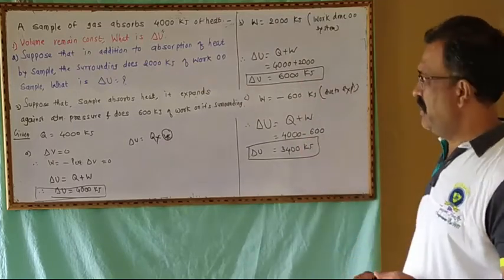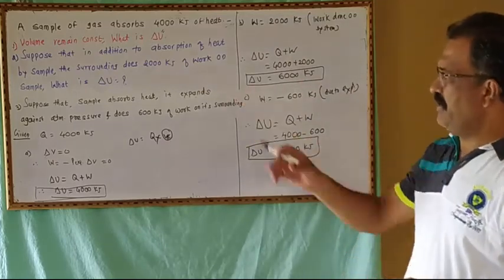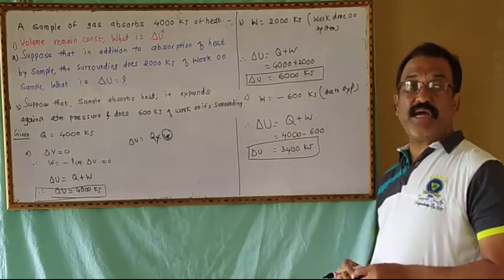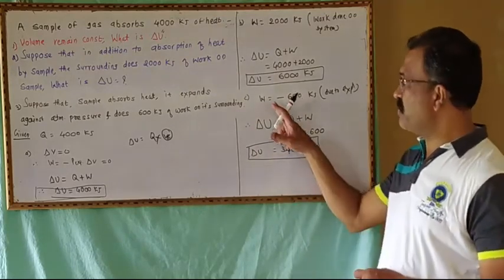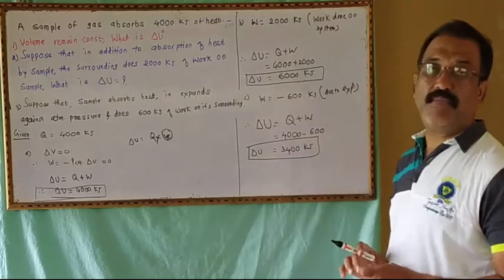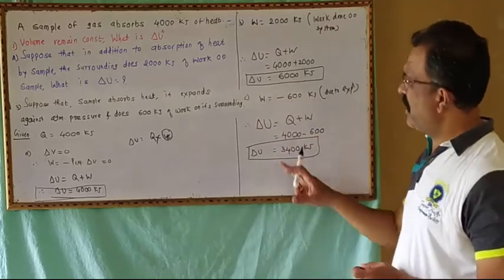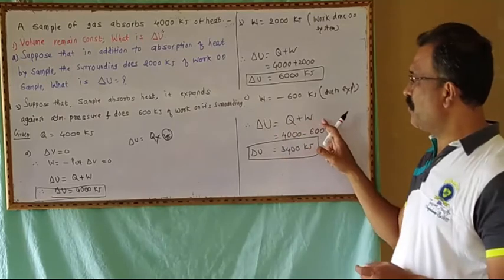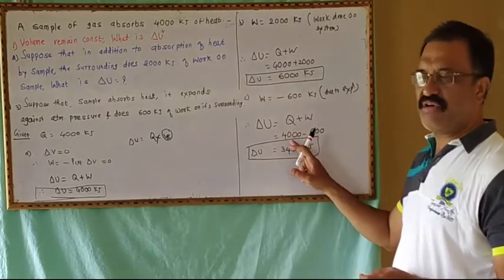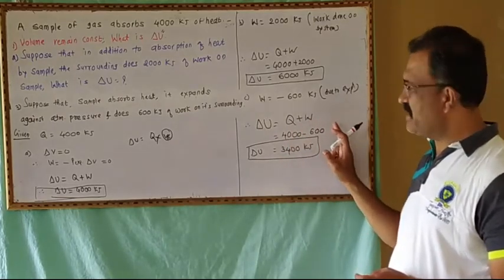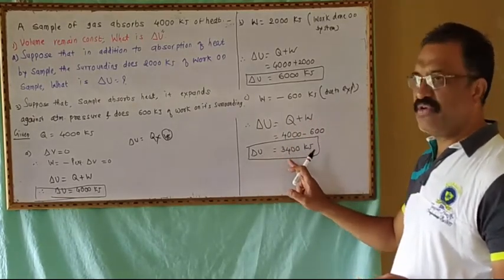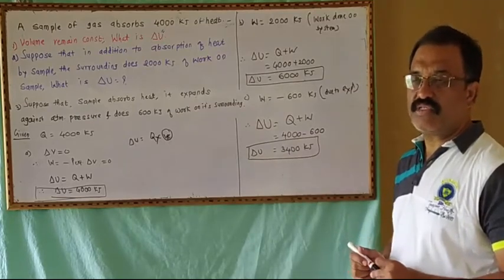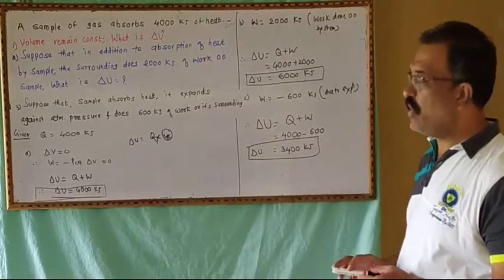For the third part: the sample absorbs heat and expands against atmospheric pressure, doing 600 kJ of work on its surroundings, so W = −600 kJ. Applying ΔU = Q + W gives ΔU = 4000 − 600 = 3400 kJ.